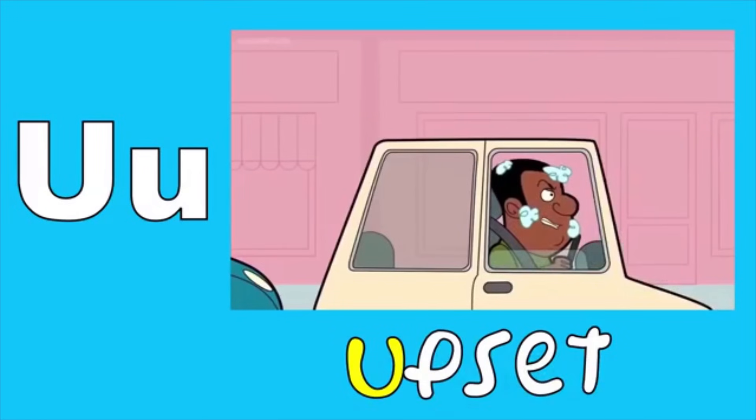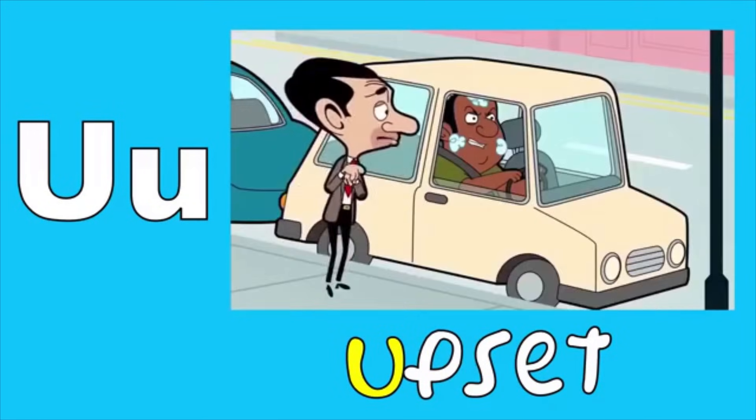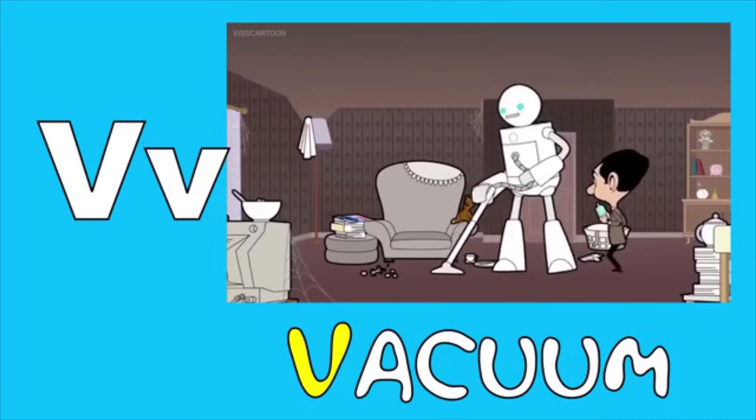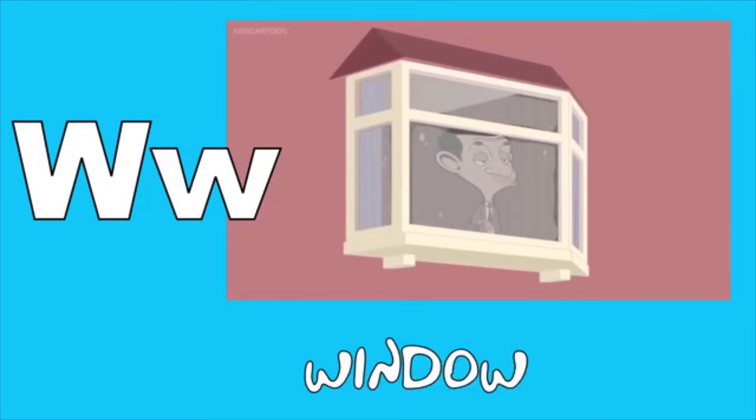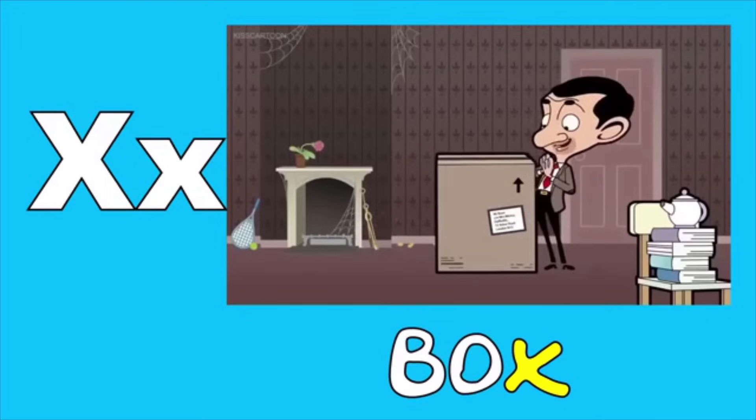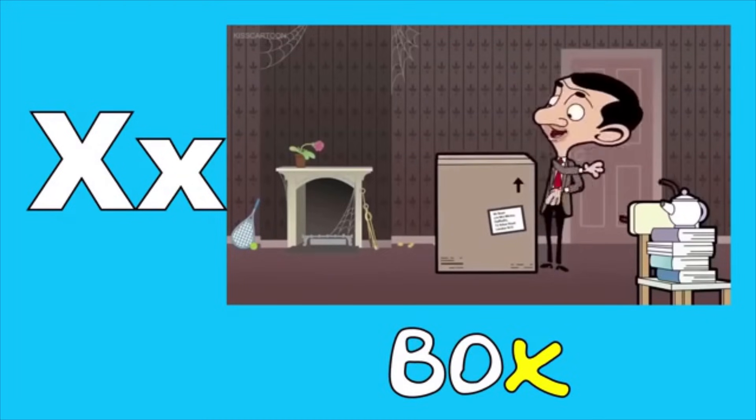U is for upset, a, a, upset. V is for vacuum, v, v, vacuum. W is for window, w, w, window. X is for box, x, x, box.